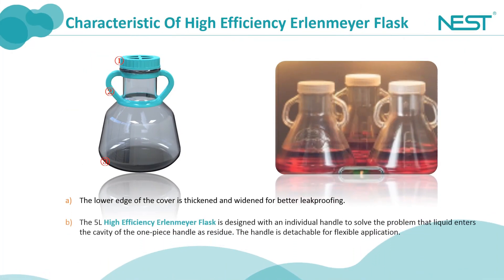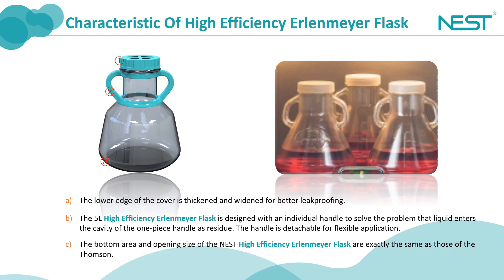The cover of Nest's flask can be screwed or unscrewed smoothly. The lower edge of the cover is thickened and widened for better leak-proofing. The 5L high-efficiency Erlenmeyer flask is designed with an individual handle to solve the problem of liquid entering the cavity of a one-piece handle as residue. The handle is detachable for flexible application. The bottom area and opening size of Nest high-efficiency Erlenmeyer flasks are exactly the same as those of S. Thompson ones, so a lot of verification work can be reduced, or even a seamless replacement is possible.